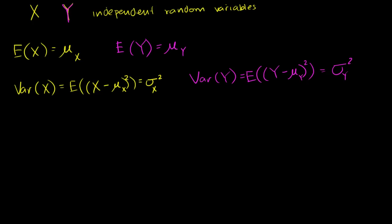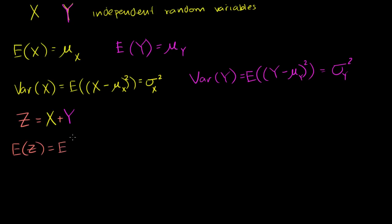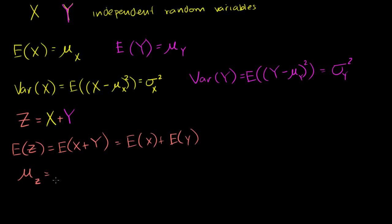You may or may not already know these properties of expected values and variances, but I will reintroduce them without a rigorous proof. If I have a third random variable z defined as x plus y, the expected value of z is equal to the expected value of x plus y, which equals the expected value of x plus the expected value of y. In other words, the mean of z is the mean of x plus the mean of y.